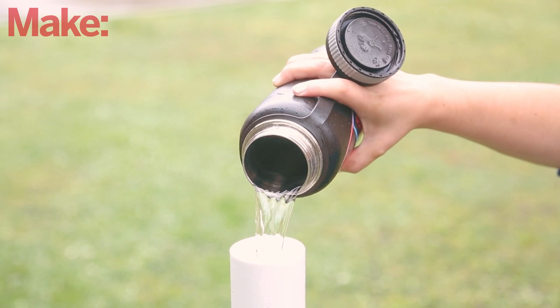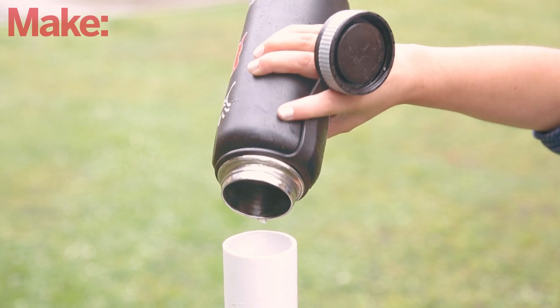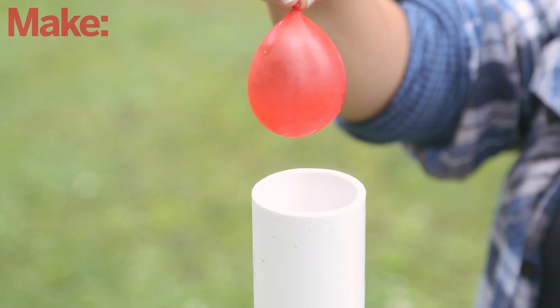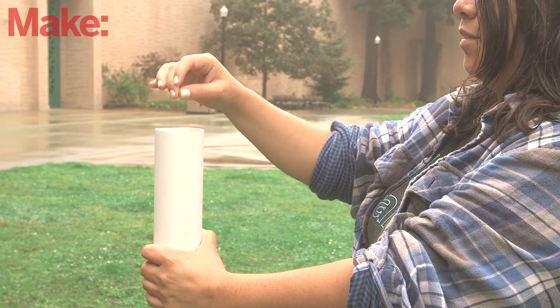Next, pour in about 4 to 5 cups of water into the barrel. This is an important step which prevents the water balloons from exploding on exit. Fill a water balloon until it is about 2 inches wide and drop it into the barrel. You may need to experiment to find the size that works the best.